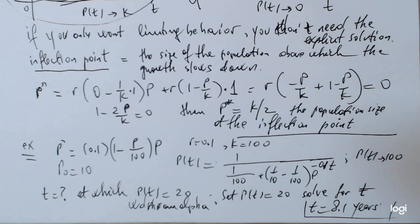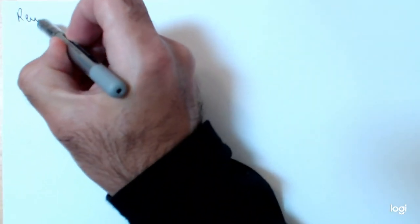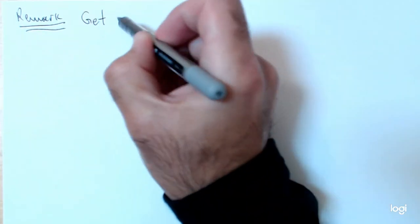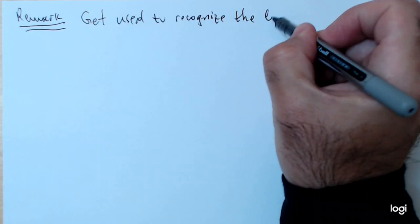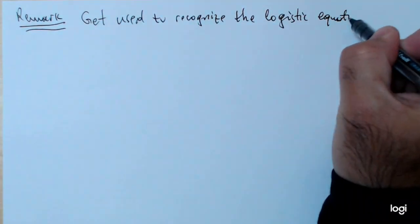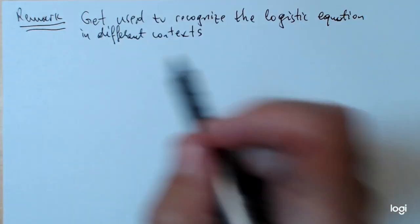So, that's an example of how to use the explicit solution. Again, we want to use it often from now on. One thing I want to mention, and that's very important before we move on to another part of today's lecture. Let's do it in the second part. You have to recognize, and let's actually write this as a remark, because that's quite important. So, get used to recognize the logistic equation in different contexts.